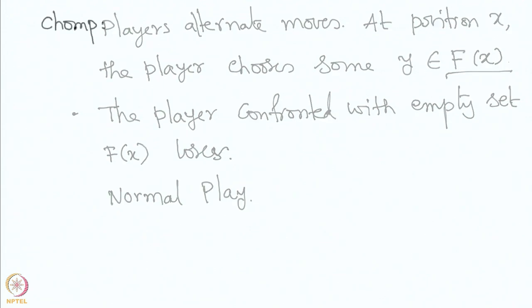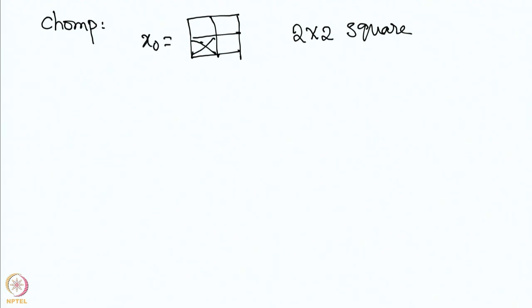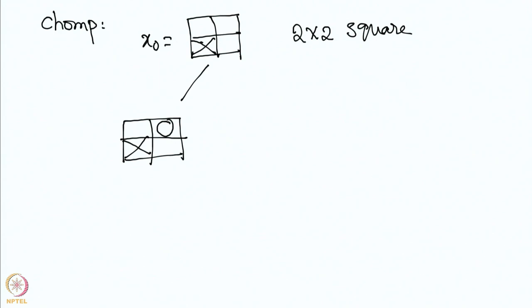Let us see some examples. We will start with a very simple game called Chomp, which we have discussed already. We take a simple setup — a 2 by 2 square. The poisonous piece is the lower-left corner. This is our initial position.